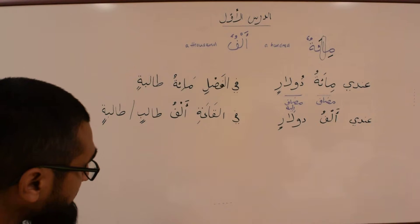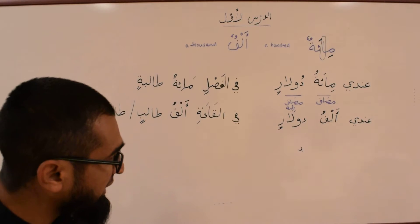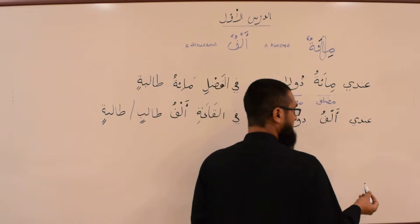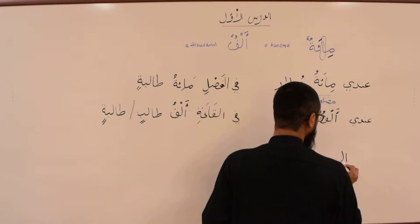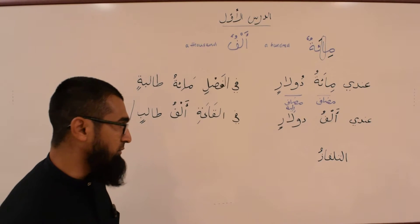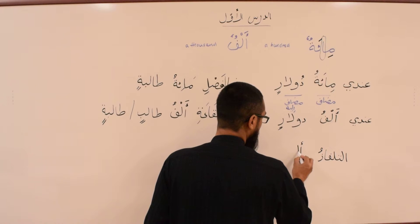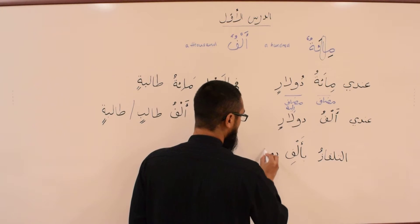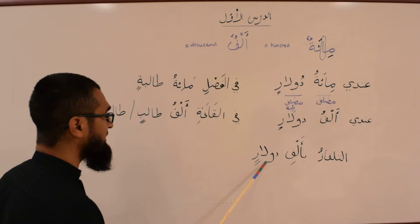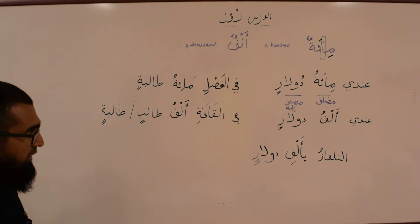One last thing: when you want to express the price of something, all you do is put a Ba in front of the figure. For instance, a television — Al-Tilfaz — you want to know how much it costs: Al-Tilfazu bi-Alfi Dularin — the television is for a thousand dollars. We just put a Ba in front of it: bi-Alfi Dularin.